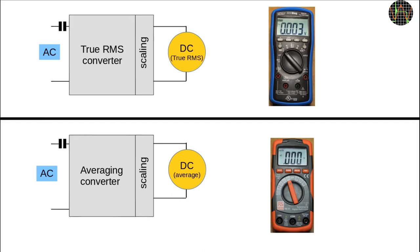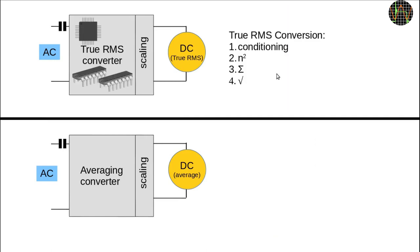To understand why this happens, you need to understand how true RMS and averaging multimeters work in principle. On the top here we have a true RMS meter and below that an averaging one. Both the true RMS and averaging meter take an AC signal and convert it to DC for display scaled in such a way that the readout corresponds to the AC value. In both meters, the incoming signal is AC coupled, that is connected through a capacitor to block unwanted DC components.